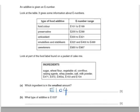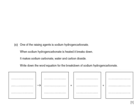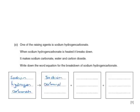The type of additive that is E153 — we look on the table to find where 153 would be, and it falls in that section, so it would be a food colour. Finally, one of the raising agents is sodium hydrogen carbonate. When sodium hydrogen carbonate is heated, it breaks down. It makes sodium carbonate, water and carbon dioxide. Write down the word equation: sodium hydrogen carbonate gives sodium carbonate plus water plus carbon dioxide.